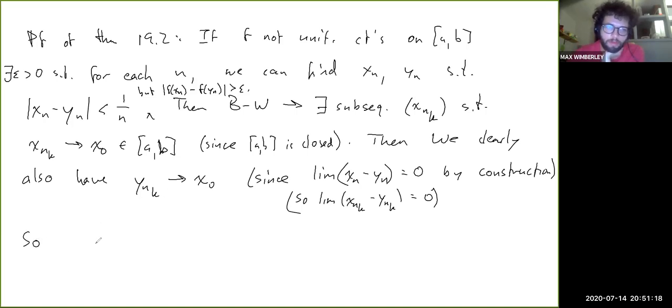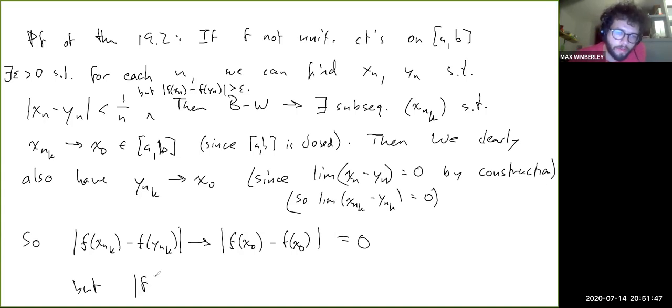That means that absolute value of f of x_nk minus f of y_nk approaches absolute value of f of x0 minus f of x0, which is 0. But we also, by construction, know that f of x_nk minus f of y_nk is greater than epsilon for all k. This is a contradiction.